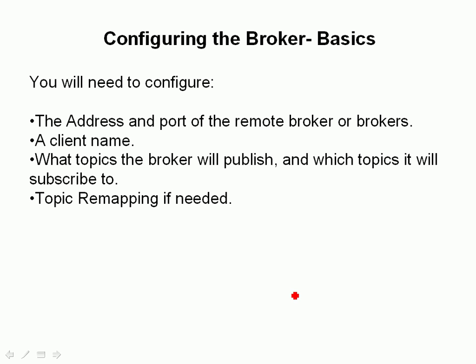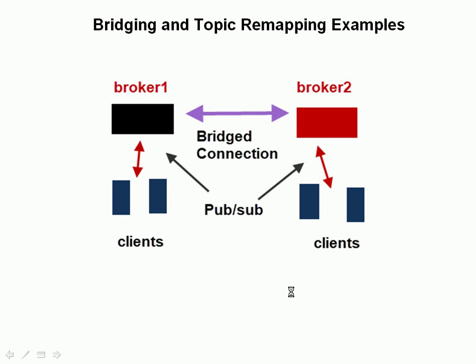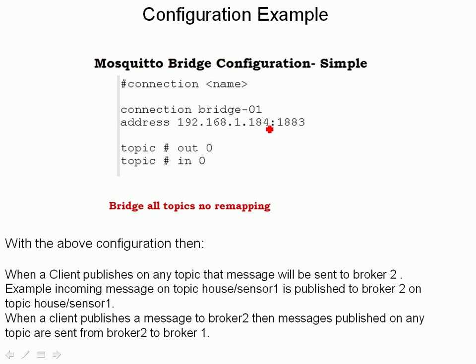Let's look at a few configuration file examples. We're going to be using this setup: broker 1 with a bridge connection to broker 2, and we're going to have clients publishing and subscribing on broker 1, and clients publishing and subscribing on broker 2.